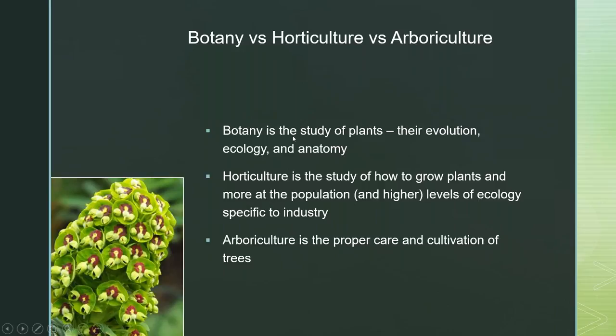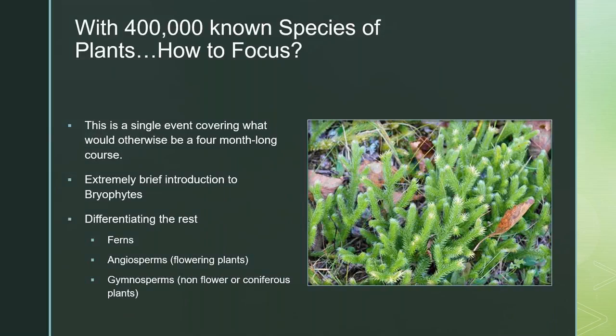Systematics is just the lineage of evolution — trying to follow the forever-branching tree of speciation. In botany, horticulture is the study of how to grow plants; it's more at the population or community ecology level, considering how plants interact with non-plants like microbes in the soil, companion planting, how plants play well or don't with each other. Arboriculture is the proper care and cultivation of trees specific to their survival, not necessarily to the quality of their wood and its market value, which would be silviculture.